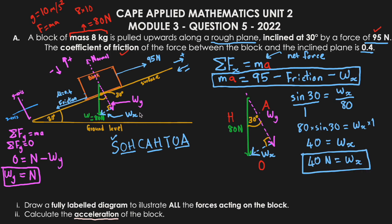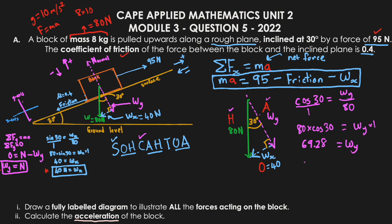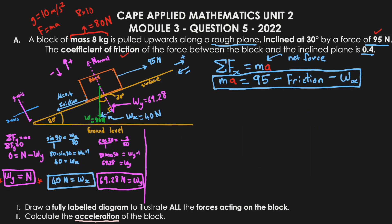Next, we find Wy — the adjacent side. Using the hypotenuse (80 N) and cosine: cos(30°) = Wy / 80. Cross-multiplying: Wy = 80 × cos(30°) = 69.28 newtons.